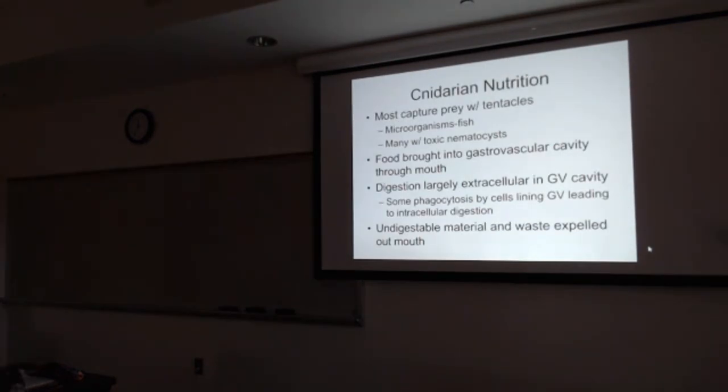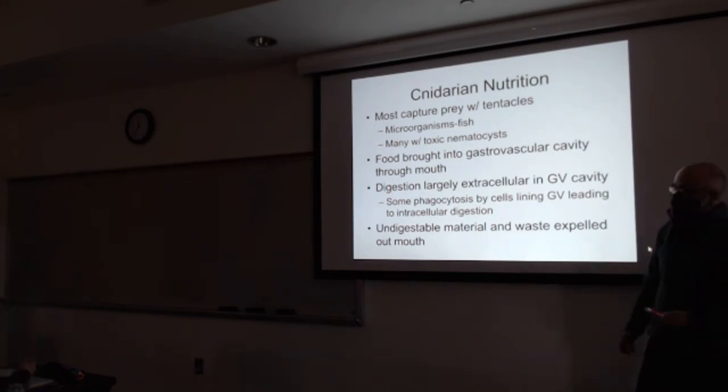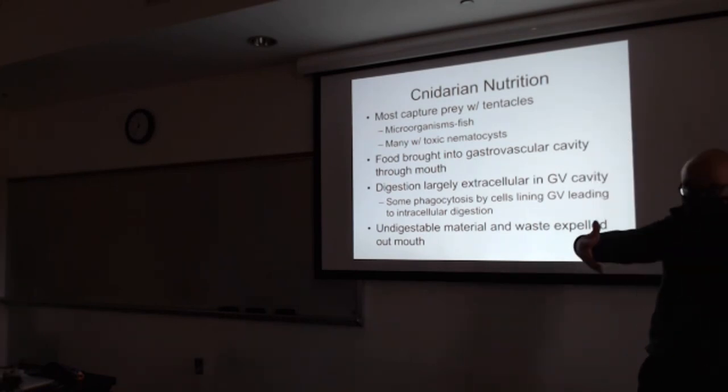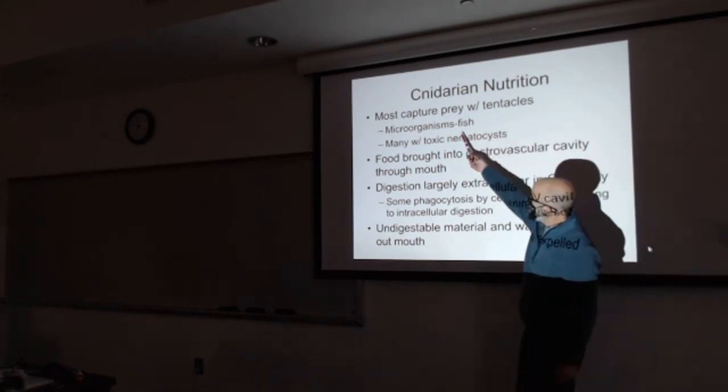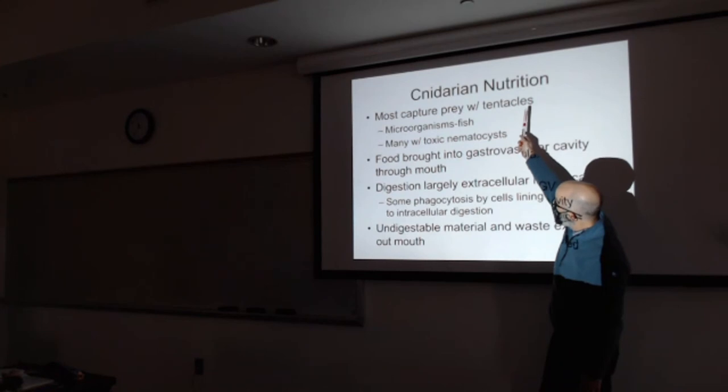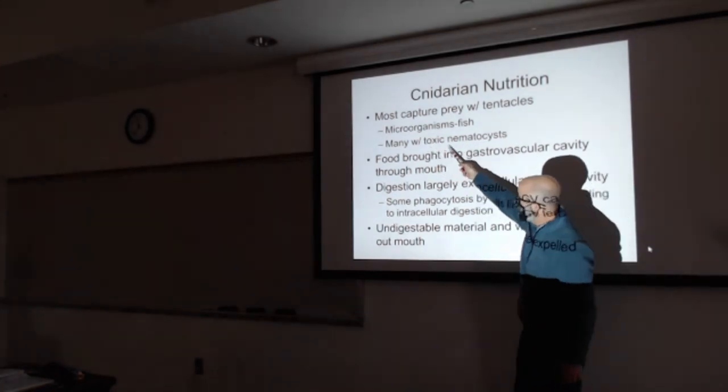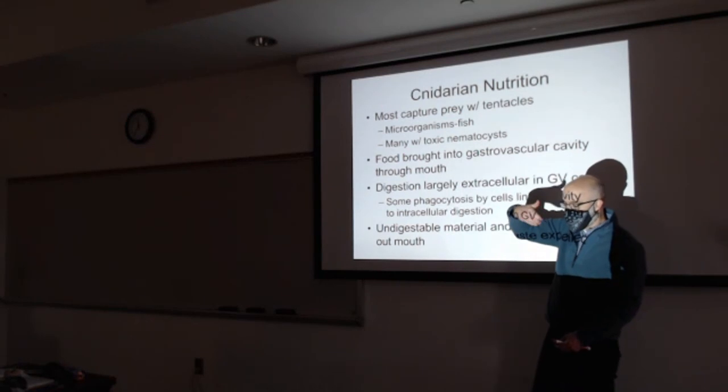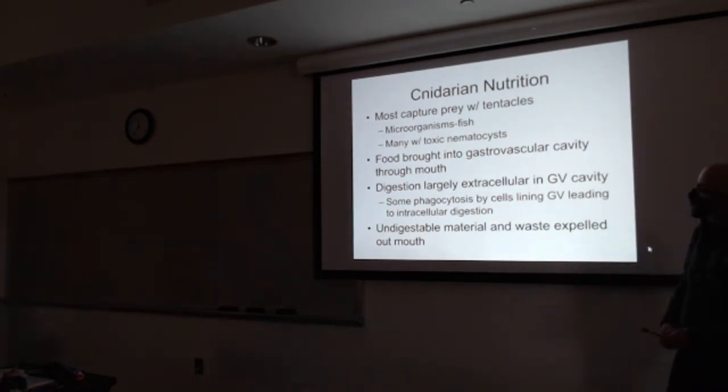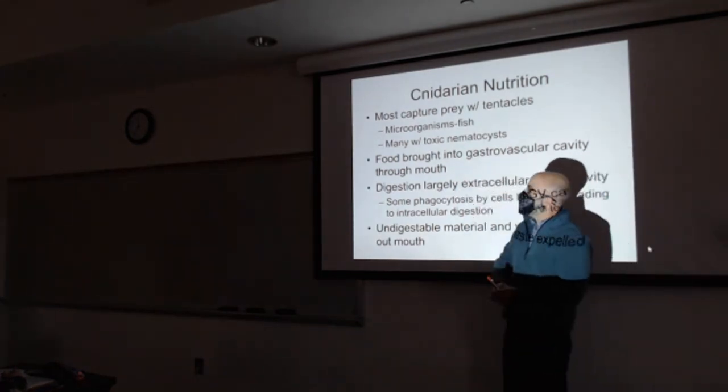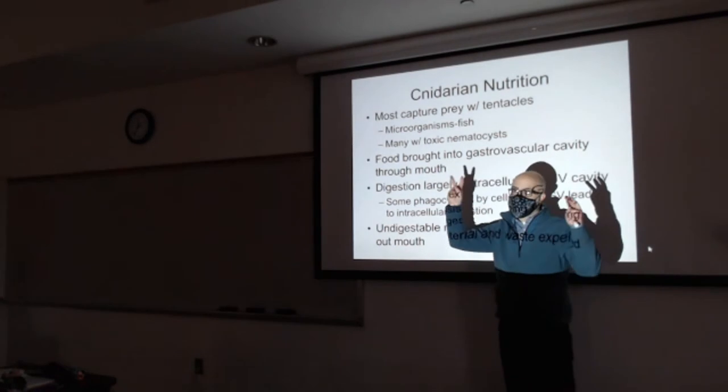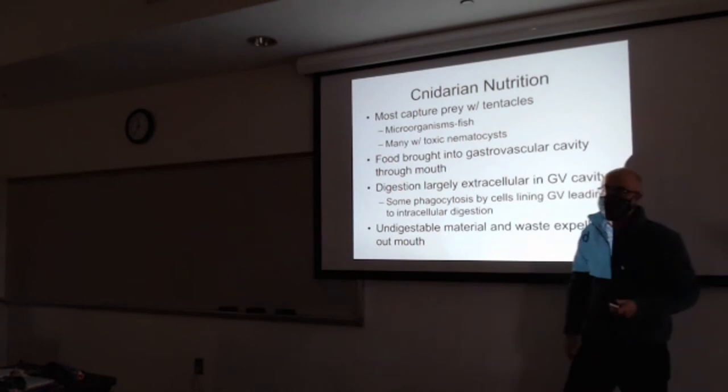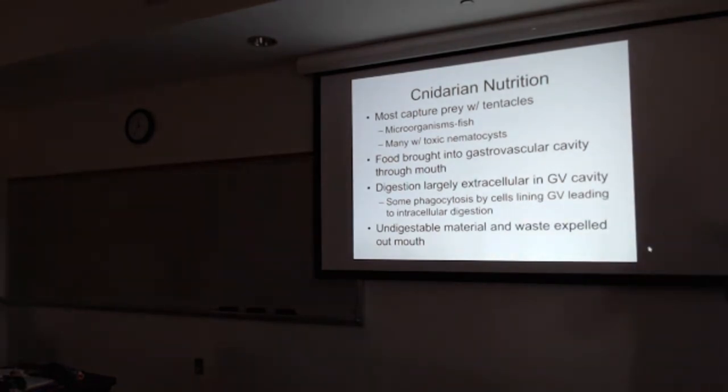So how do they obtain nutrients? Some people consider cnidarians to be filter feeders. The tentacles are often dangling down. If you're a medusa, tentacles hanging down. Animals go through there, microorganisms or fish. Those nematocysts will disable their prey. And then they just draw up the prey on the tentacle and stuff it into their mouth. Their gastrovascular cavity. Kind of loosely called a mouth because it's also the anus. So I guess it depends on the hour, whether it's a mouth or anus. I like mouth-anus myself.